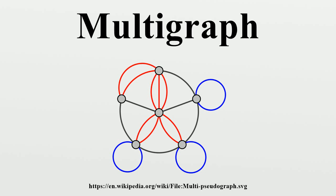Directed multigraph: a multigraph is a directed graph which is permitted to have multiple arcs, i.e., arcs with the same source and target nodes. A multigraph G is an ordered pair G, equals with V, a set of vertices or nodes, and A, a multiset of ordered pairs of vertices, called directed edges, arcs or arrows.